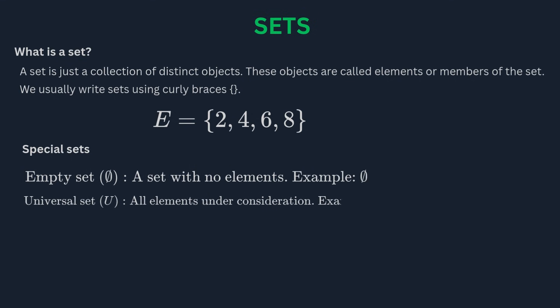The universal set, often written as U, is the set of all elements under consideration in a particular context. We can also describe sets using set builder notation. This is useful for very large or infinite sets. For example, the set of all integers can be written as the set of all x such that x is an integer.